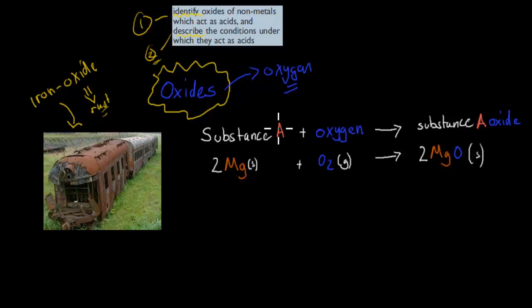Here we've got substance A, any substance, and this has reacted with oxygen. This happens when an oxide is formed - some substance reacts with oxygen and forms substance A oxide.